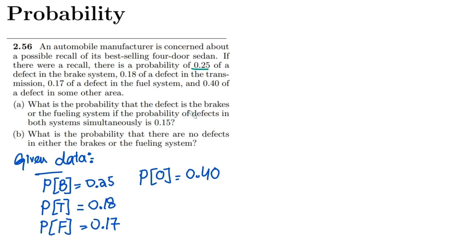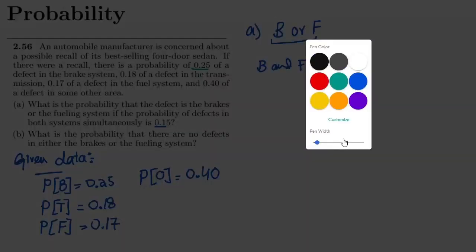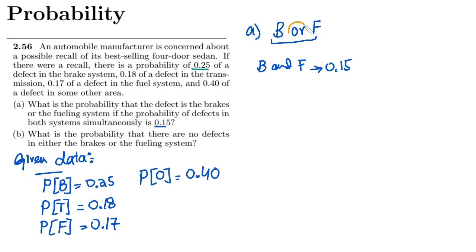Now in part A, what is the probability that the defect is in the brakes or the fuel system, if the probability of defects in both systems simultaneously is 0.15? So in part A, I have to find the probability of B or F, where the probability of defects in both systems simultaneously — that is B and F simultaneously — is 0.15.